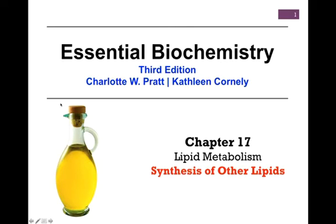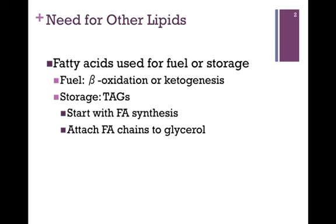In our next lesson on Chapter 17, Lipid Metabolism, we'll consider the synthesis of other lipids. In previous lessons, we considered the use of fatty acids as fuel. In the process of beta-oxidation, we generated acetyl-CoA that could then feed into the citric acid cycle, giving us a large production of ATP for fuel or energy use.